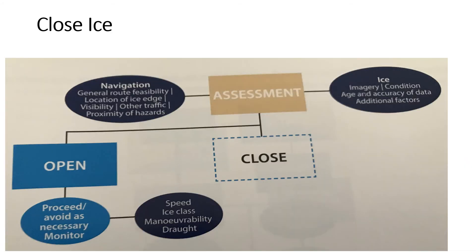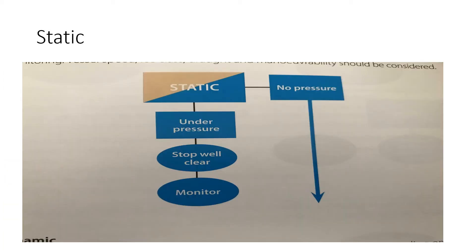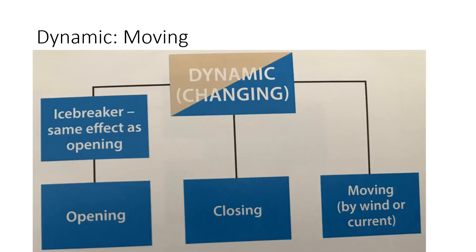The decision process in ice concentrations greater than 7 by 10 is divided into two decision lines: dynamic ice conditions and static ice conditions. A concentration of close ice that is static may or may not be under pressure. If there is no pressure, the decision process proceeds directly to the detailed concentration of ice types within the overall ice regime. If close pack ice that is static is under pressure, the vessel should stop until pressure abates or conditions change, while monitoring constantly and returning to the top of the decision process. If the vessel becomes beset, action should be taken to clear if at all possible, continuing monitoring, with vessel speed, ice class, draft, and maneuverability considered.